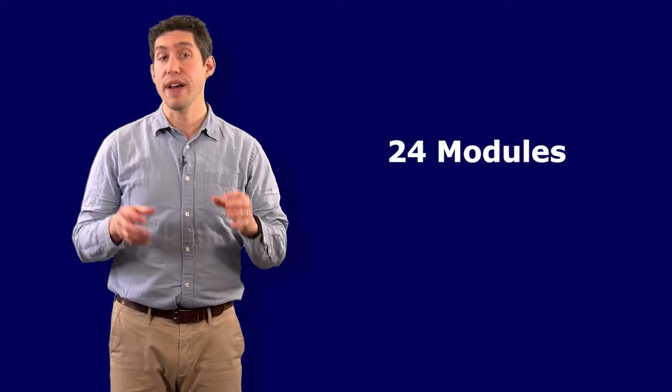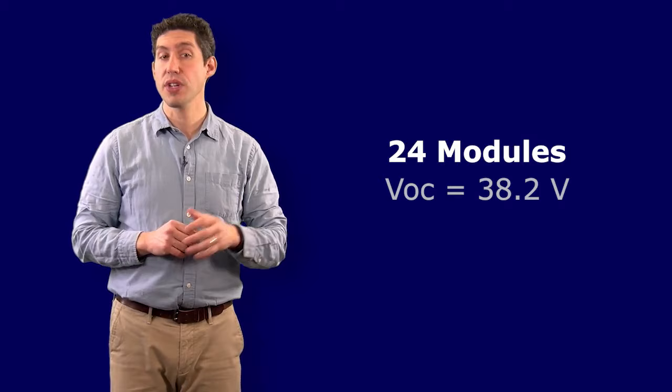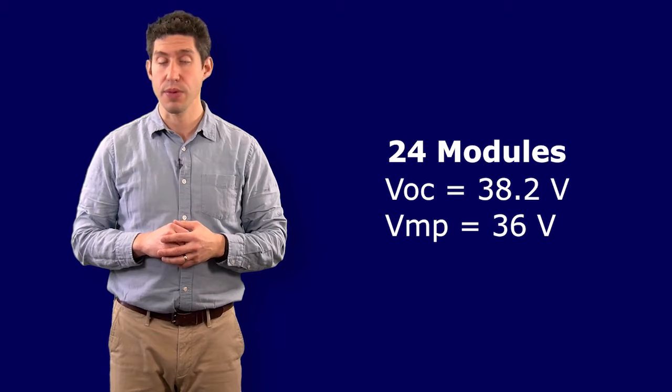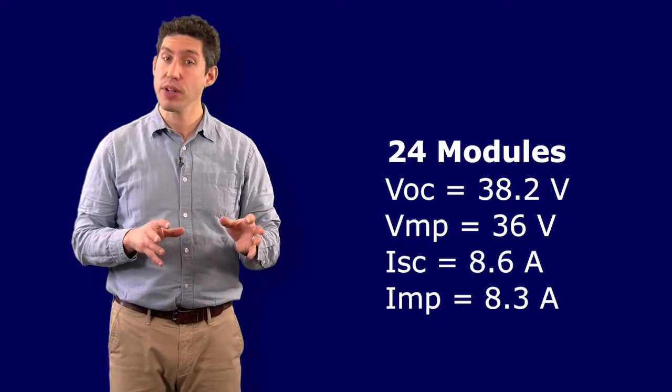Now we know our system will have 24 photovoltaic modules, and these modules are listed as having an open circuit voltage of 38.2 volts and a maximum power voltage of 36 volts. The short circuit current is rated as 8.6 amps and the maximum power current is rated at 8.3 amps.